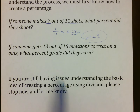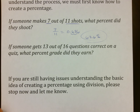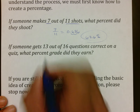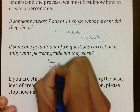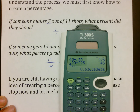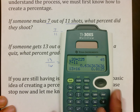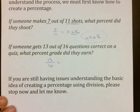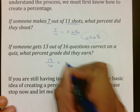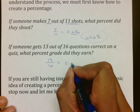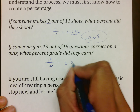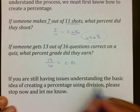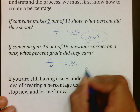If someone gets thirteen out of sixteen questions correct on a quiz — you can use this with my quizzes, since that's how I grade them — you divide thirteen by sixteen to get 0.812. I don't go past the second digit, so that rounds to eighty-one percent.